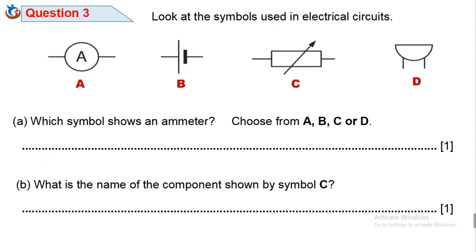Question 3. Look at the symbols used in electrical circuits. 3A. Which symbol shows an ammeter? Choose from A, B, C, or D. Before we answer these questions, let's identify and name the electrical symbols from symbol D.